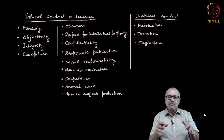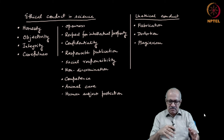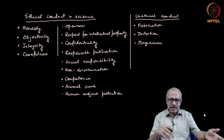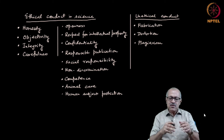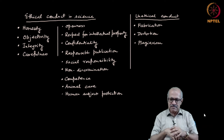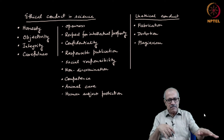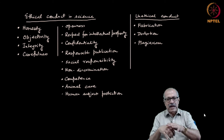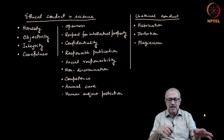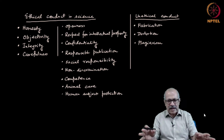Nowadays there are plagiarism-checking software like Turnitin and others. It is very easy to detect plagiarism. Whenever you submit a paper to a journal, they normally do that check, so it is not possible to get away with plagiarism these days. Do not even try that.